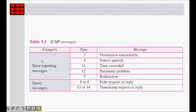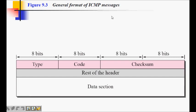In the ICMP message format, the first eight bits represent the type of the error. The next eight bits represent the code, or subtype. For example, destination unreachable has different codes depending on whether it came from the destination host or from an intermediate router. The rest of the header includes a checksum to detect errors in the packet.